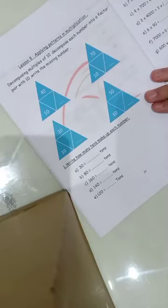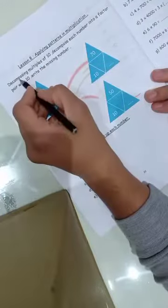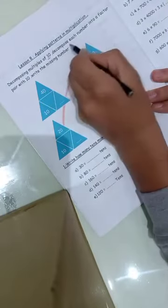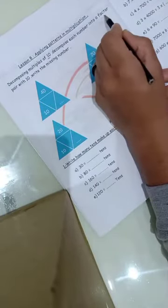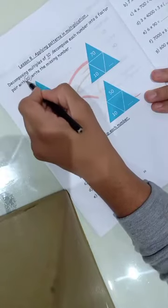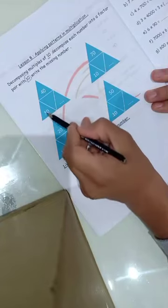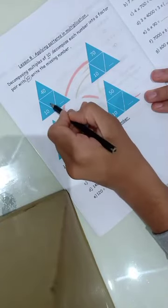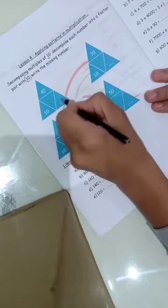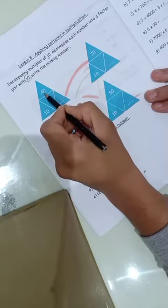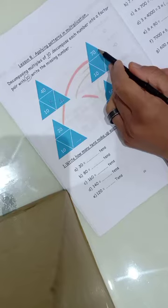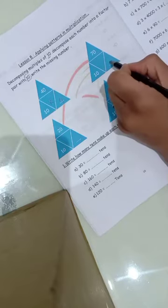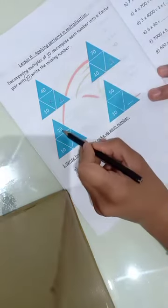Hi, Engineer 4 Lesson 8: Applying patterns in multiplication - decomposing multiples of 10. Decompose each number into factors paired with 10. For example, 40 equals 10 times what? 10 times 4. The factors of 40 are 10 and 4. For 70, the factors are 10 times 7.